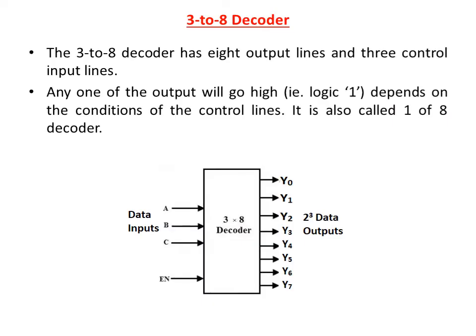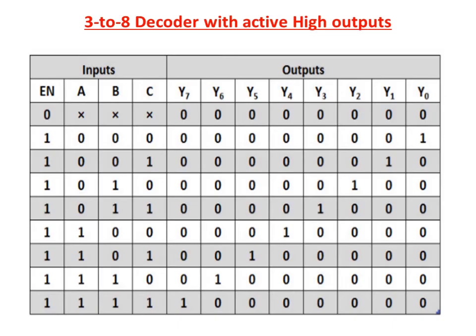Next, the 3-to-8 decoder. The 3-to-8 decoder has 8 output lines and 3 control input lines, and any one of the outputs will go high depending on the condition of the control lines. It is also called a 1-of-8 decoder. The inputs are A, B, C along with an enable input, and the outputs are Y0 to Y7 — 8 outputs. This is the function table for active high output.